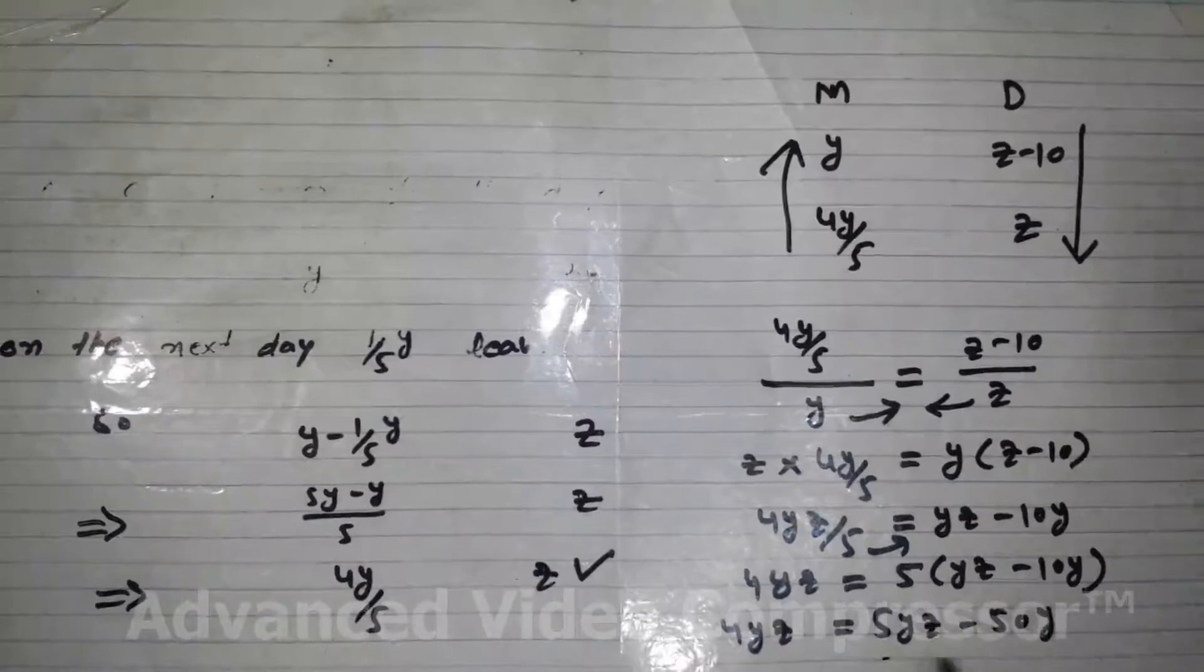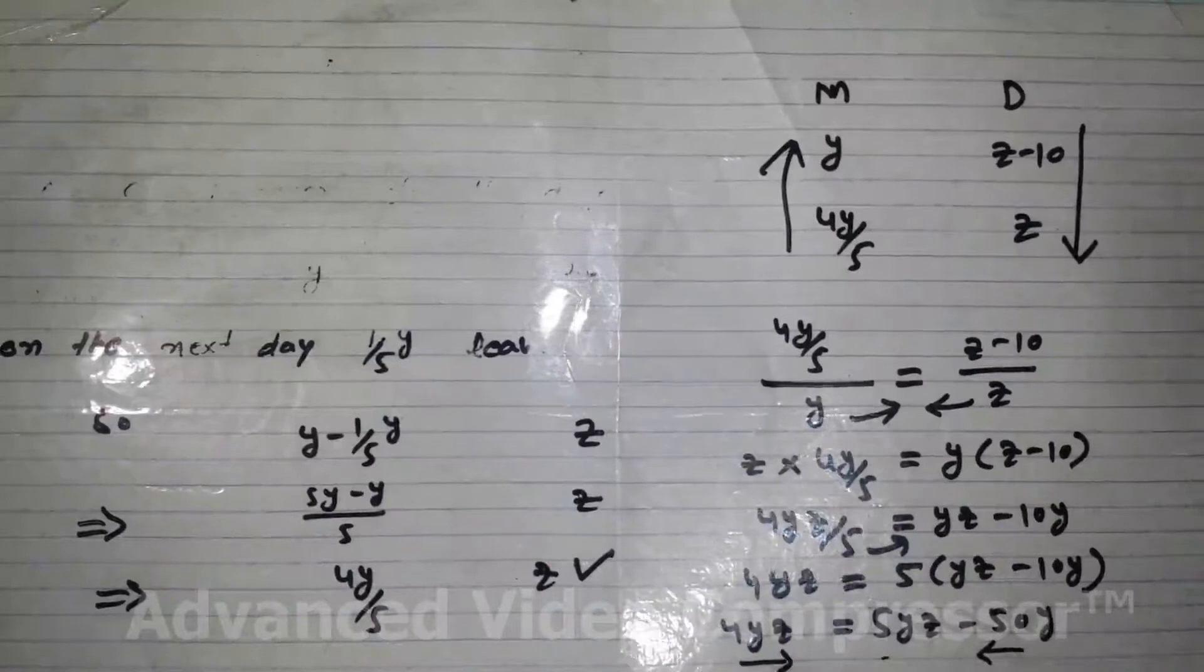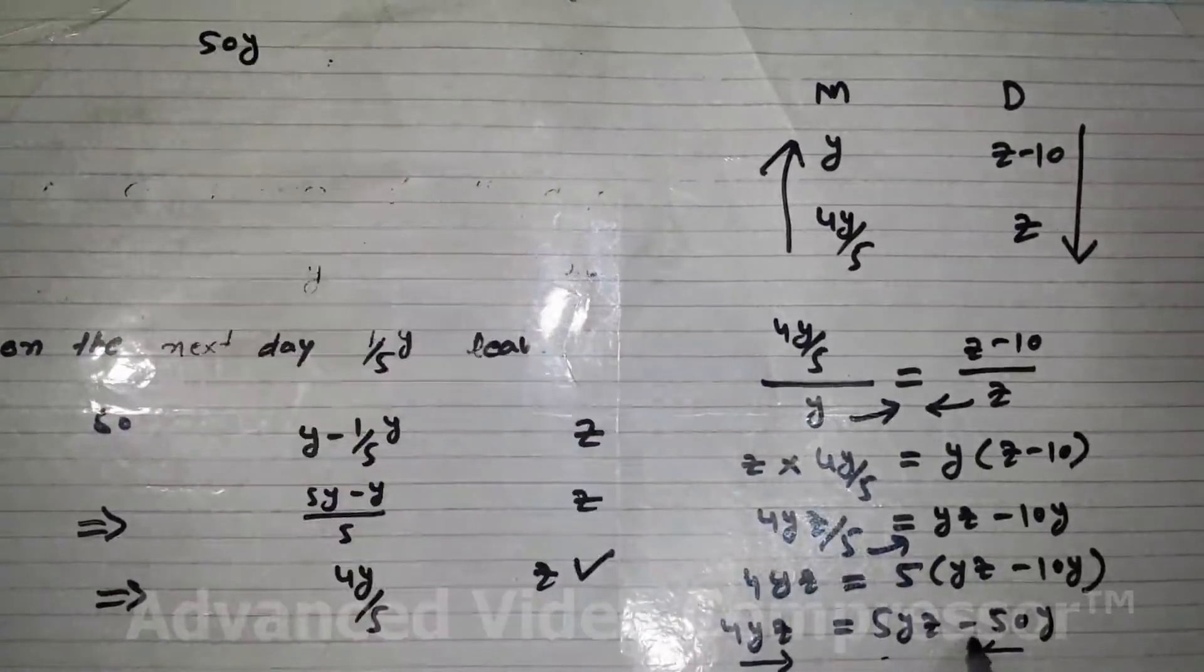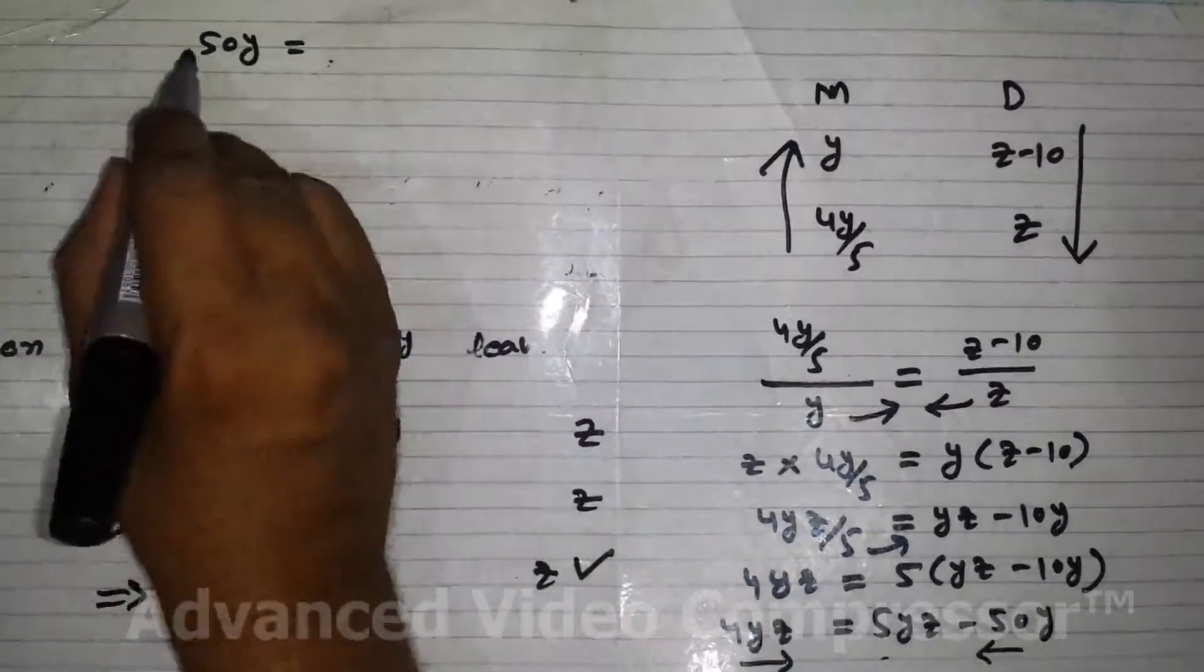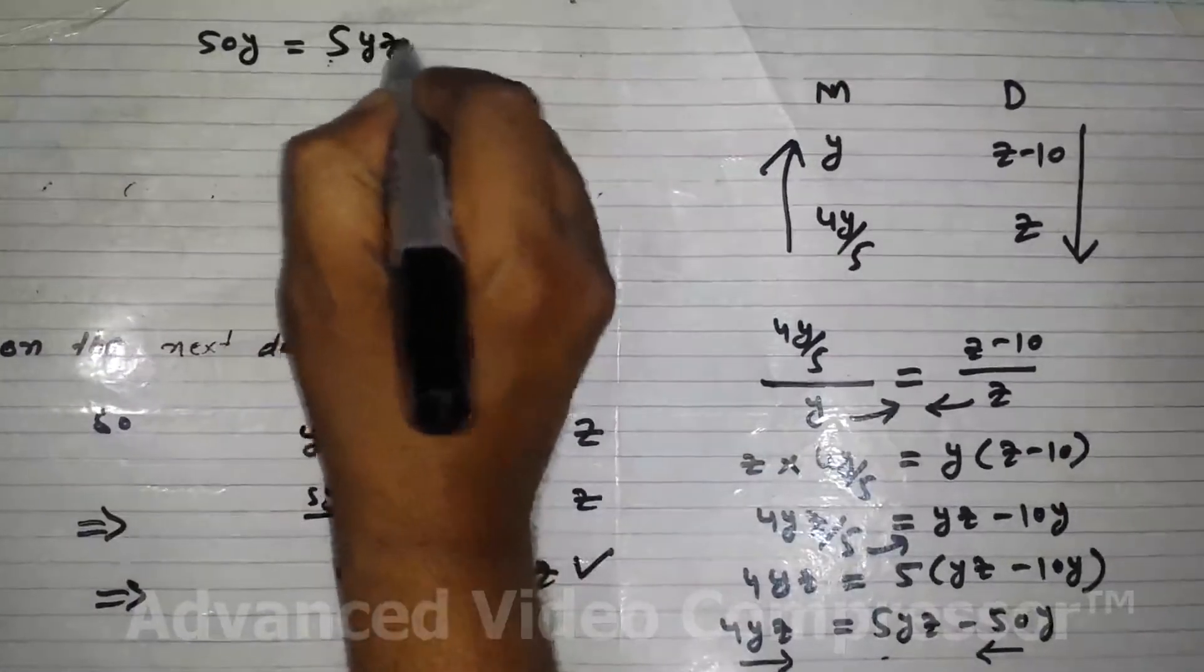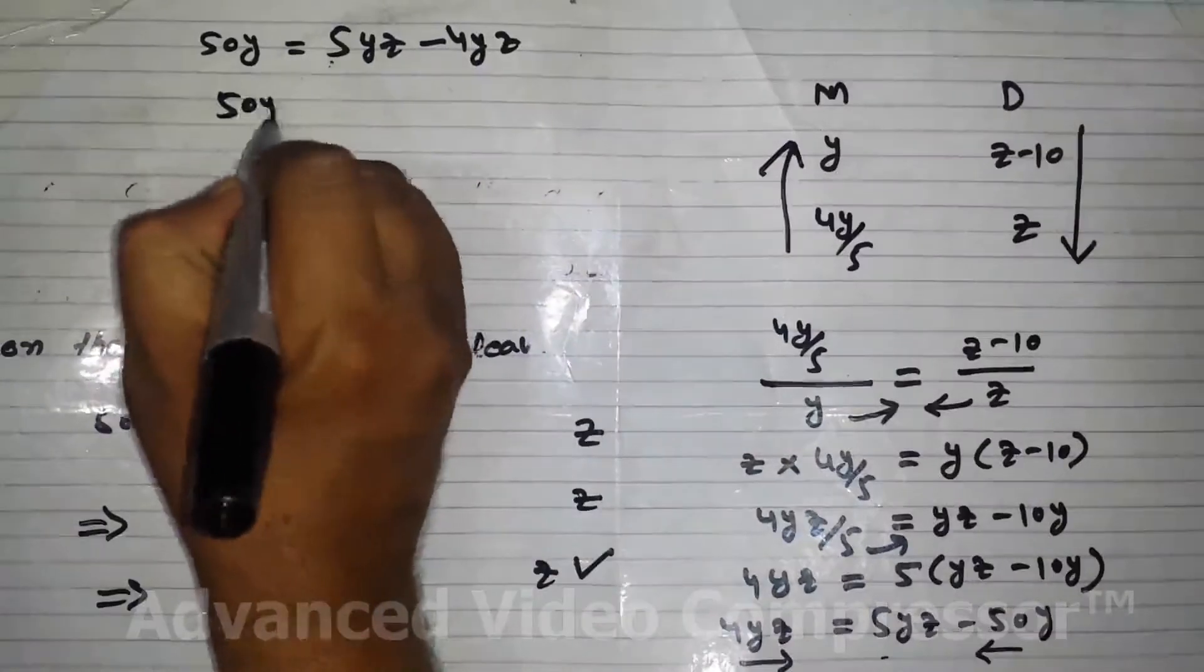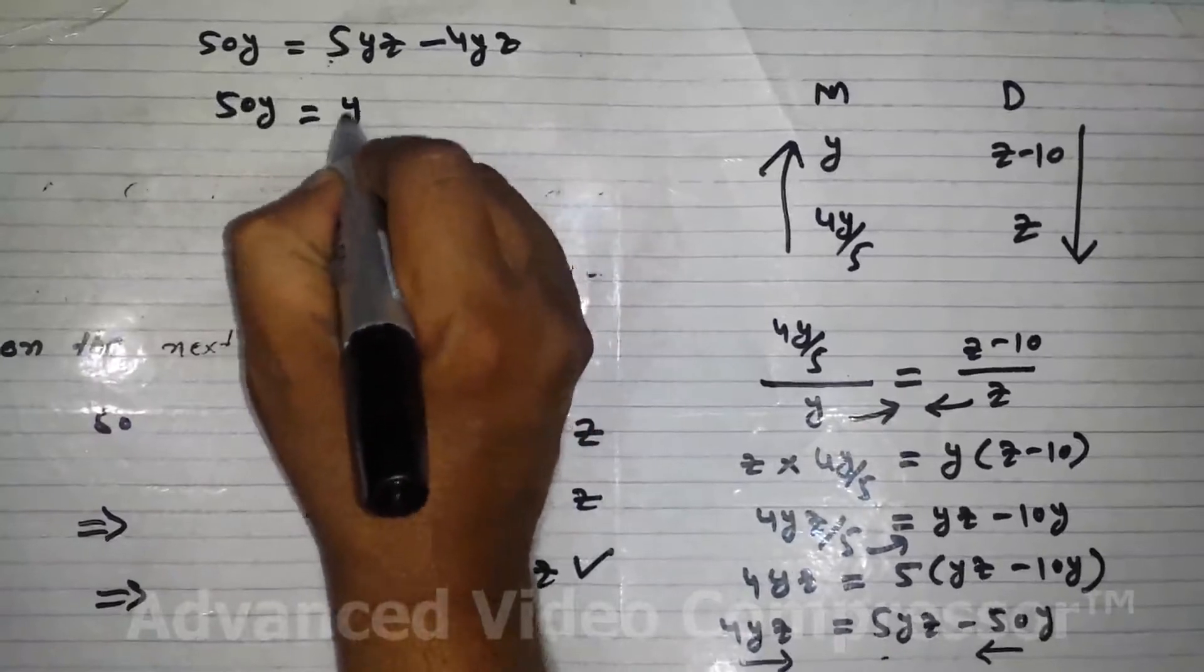Now we can move this negative term to the other side of the equal sign and 4YZ to the other side. We get 50Y, because it was negative, it becomes positive. And here we're left with 5YZ. When 4YZ goes to the other side, it becomes negative. So we get 50Y equal to 5YZ minus 4YZ, equal to only YZ, 1YZ.